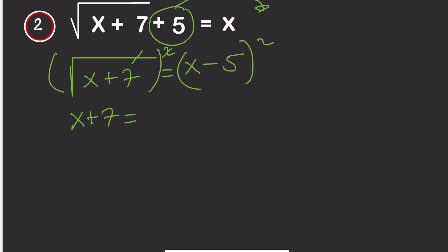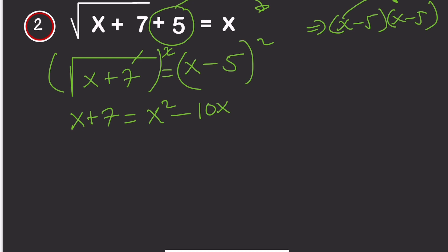x minus 5 squared is the same as x minus 5 times x minus 5. Opening the bracket gives x squared minus 10x plus 25. We need to make this a quadratic equation, so we bring the x across: x squared minus 10x minus x gives minus 11x, and 25 minus 7 gives plus 18.